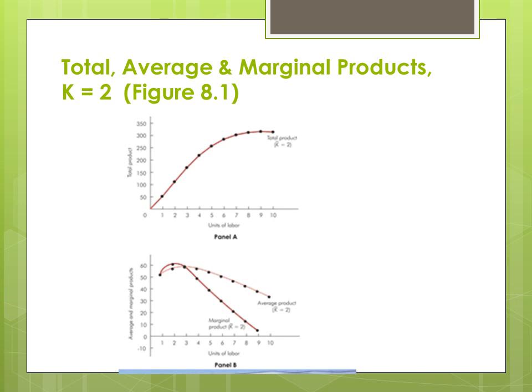After a certain point, when marginal product and average product intersect each other, that is the point where average product is maximum. When marginal product is zero, total product is at its maximum. When total product starts decreasing, marginal product is also decreasing and becomes negative.